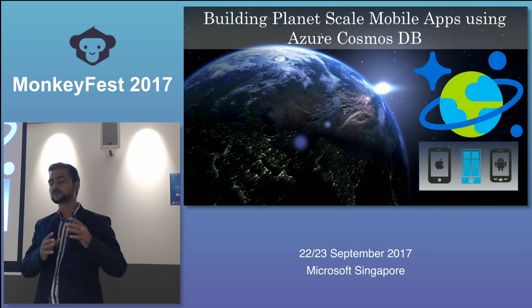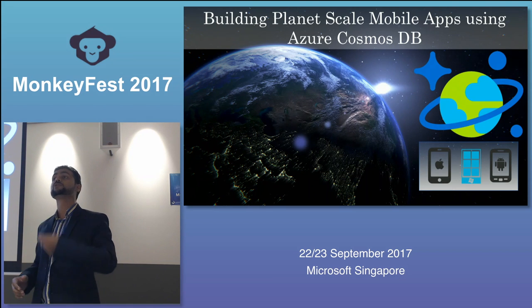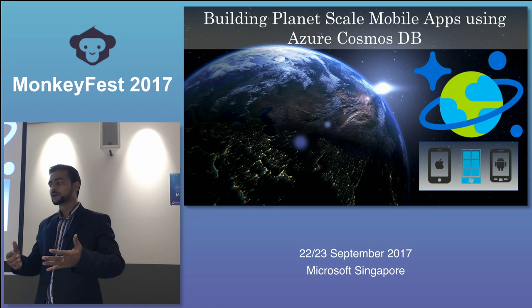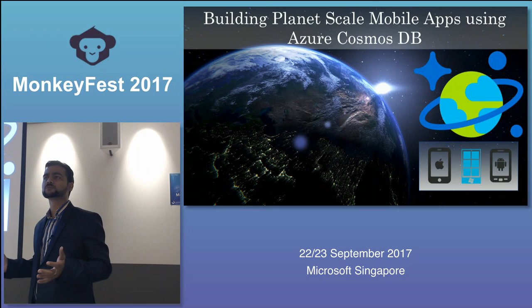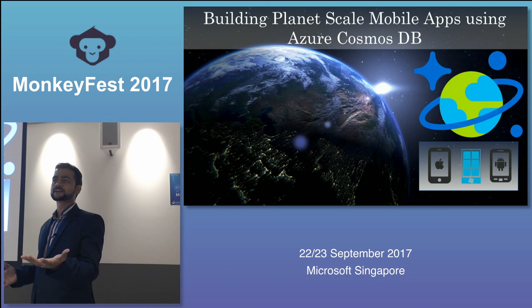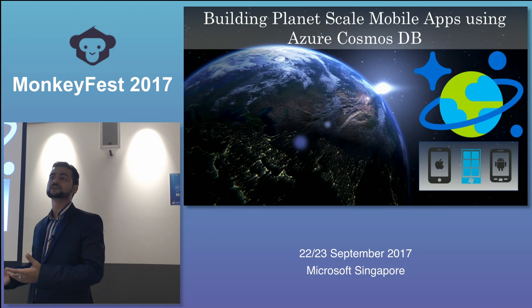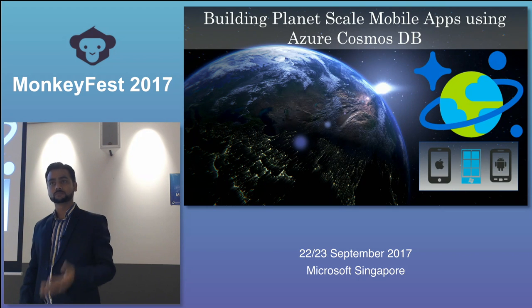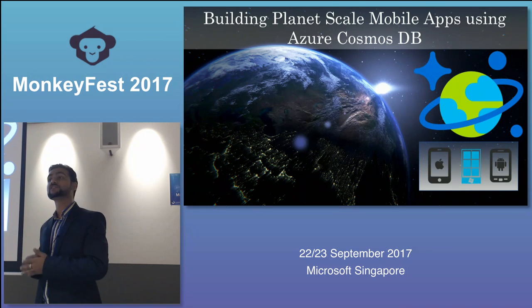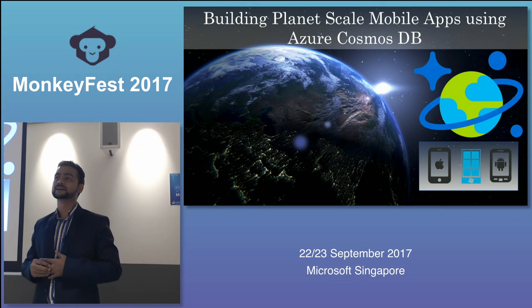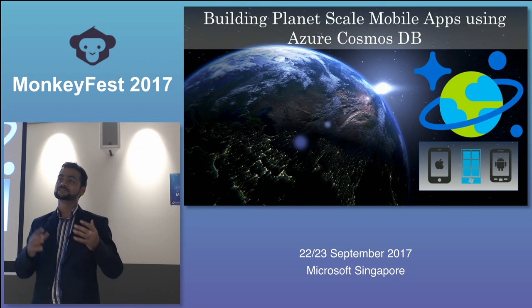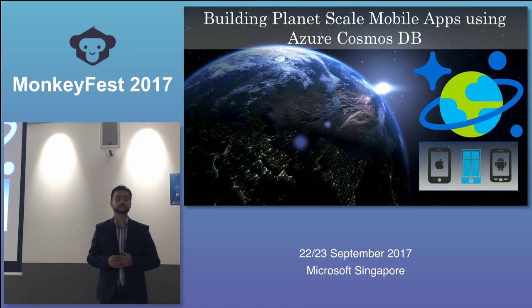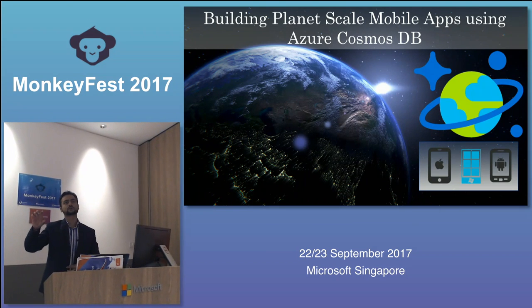We will see how much Cosmos DB's capabilities are and how you can build your planet-scale apps — how you can achieve geo-replication. Let's say your app went viral in Singapore but is gaining users in Europe and the US. How can you minimize latency for those users without writing any single line of code, just through the GUI? Geo-replication just with the help of a GUI. This is just a glimpse of what we're going to see in the next 50-55 minutes.